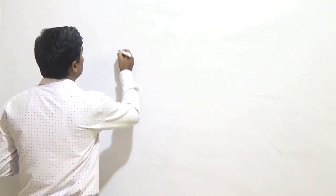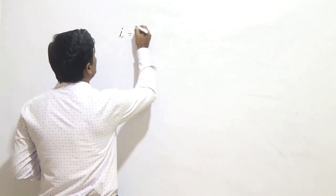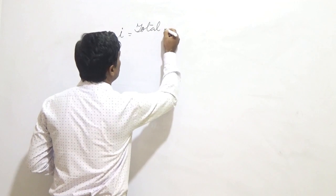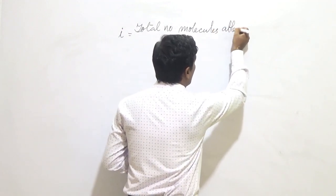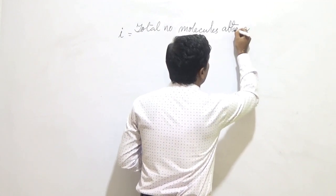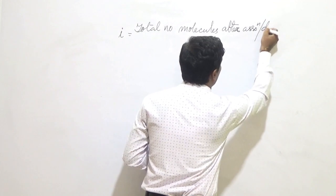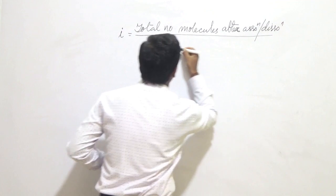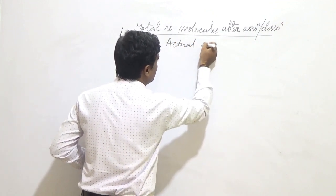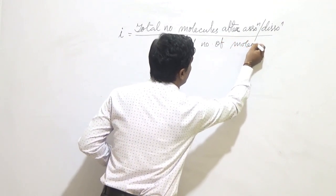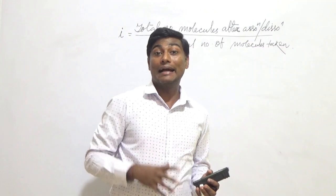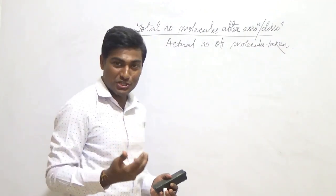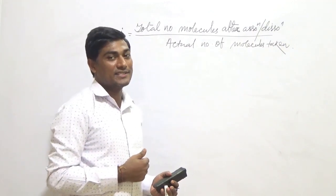In that class, we derived the Van't Hoff factor i to be like this: the factor i is equal to the total number of molecules after association or dissociation divided by the actual number of molecules taken. So the Van't Hoff factor is the ratio of the total number of molecules after association or dissociation to the actual number of molecules taken.